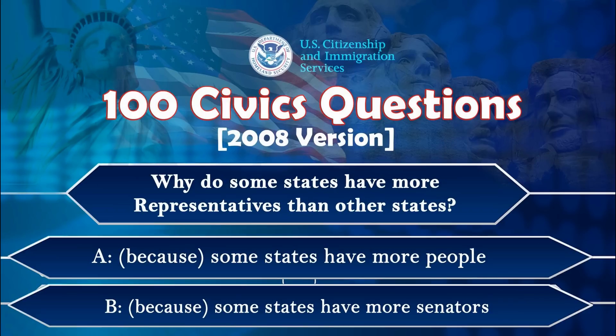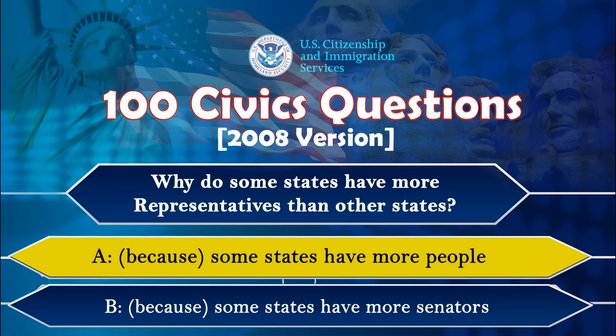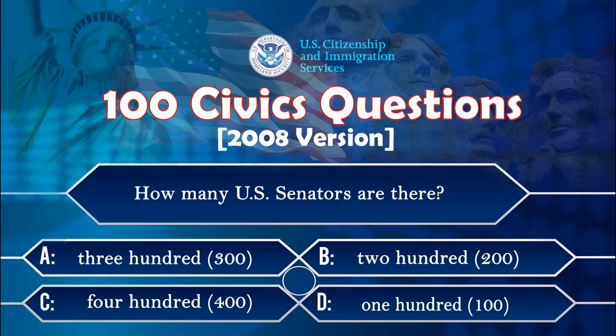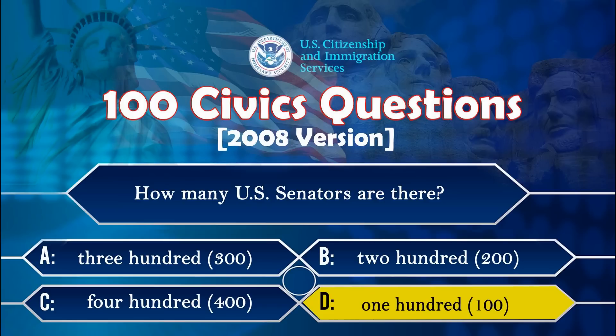Why do some states have more representatives than other states? Because some states have more people. How many US senators are there? 100.